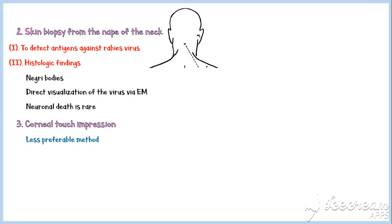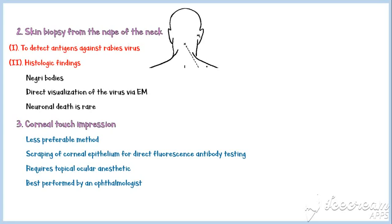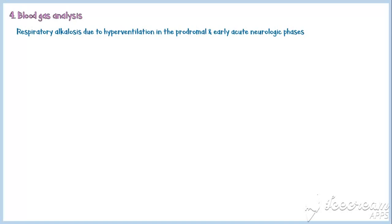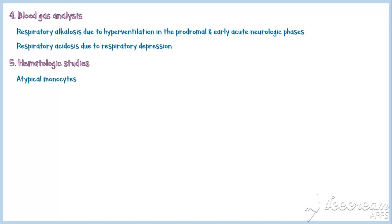Corneal touch impression is a less preferable method for diagnosing rabies, where the corneal epithelium is scraped for direct fluorescence antibody testing. This requires a topical ocular anesthetic and is best performed by an ophthalmologist. Blood gas analysis can detect respiratory alkalosis due to hyperventilation in the prodromal and early acute neurologic phases, followed by respiratory acidosis due to respiratory depression later. Hematologic studies may reveal atypical monocytes in blood, and EEG changes occur due to generalized vasospasm of cerebral arteries.